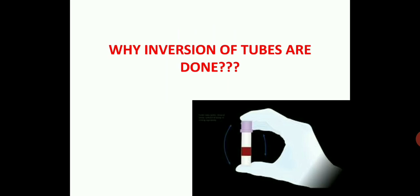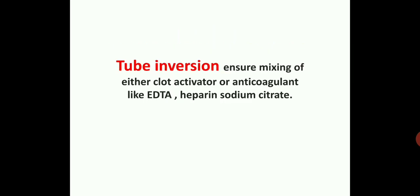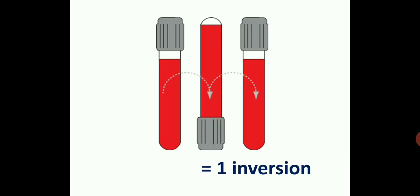In the laboratory we invert the tube to mix it with anticoagulant, but why do we do inversion of tubes? Tube inversion is done to ensure the mixing of either clot activator or anticoagulant — like EDTA, heparin, or sodium citrate — with the blood. When we invert a tube three times in a row, that is termed one inversion. The tubes must be inverted a specific number of times to adequately mix the clot activator or anticoagulant.